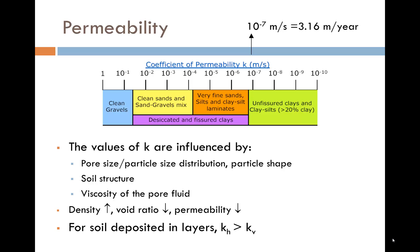Here are typical permeability values for different soil types. The values of K are influenced by pore size or particle size distribution and particle shape, soil structure, and viscosity of the pore fluid. It is important to make the link between density, void ratio and permeability. As density increases, void ratio reduces and permeability reduces. For the purposes of this course, we assume that the permeability is the same in all directions. But in reality, sedimentary soils that were deposited in layers have greater permeability in the horizontal direction than in the vertical direction.